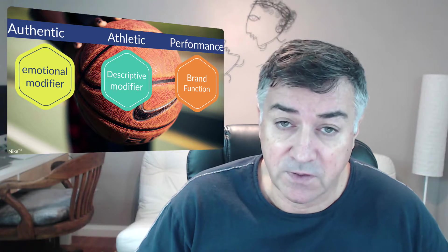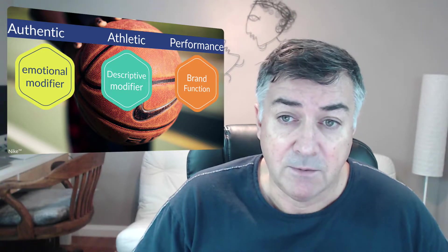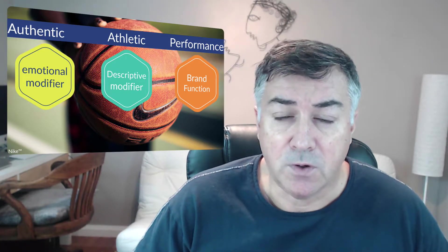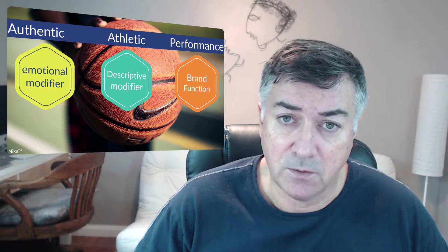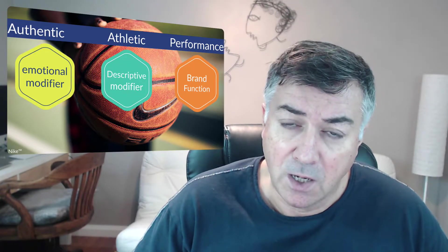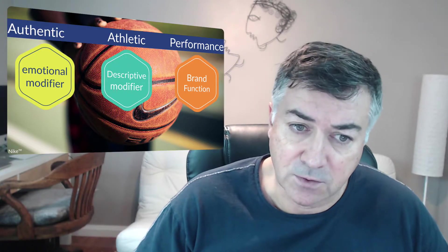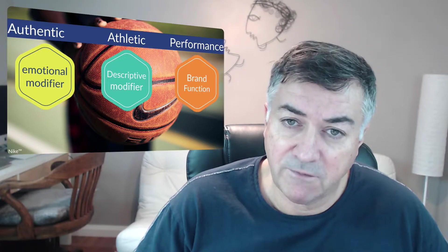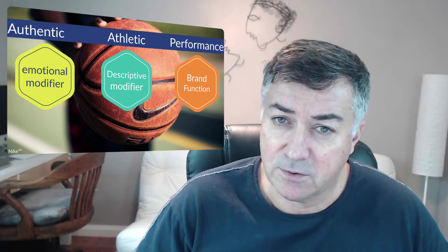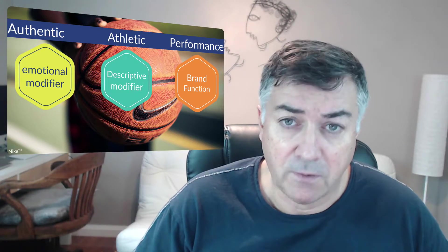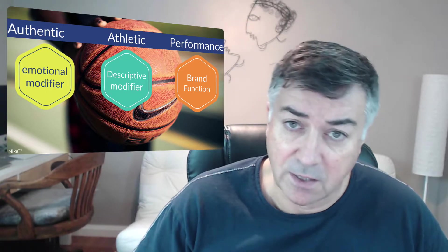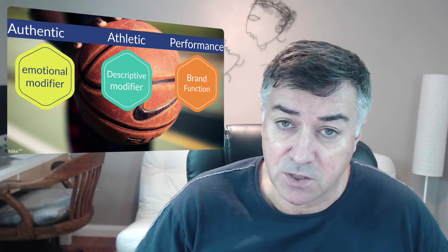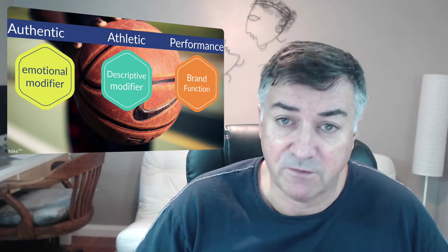Both the tagline for the outside and the brand mantra for the inside must, of course, align. Because they want to set the priority to a specific way to practice sports — the way when you challenge yourself, when you try to go further, higher, faster — they chose a very selective set of words. These words are strong, they are clear, and they are well-balanced. 'Authentic athletic performance' — each of them is totally aligned with their respective function: the emotional modifier, the descriptive modifier, the brand function.